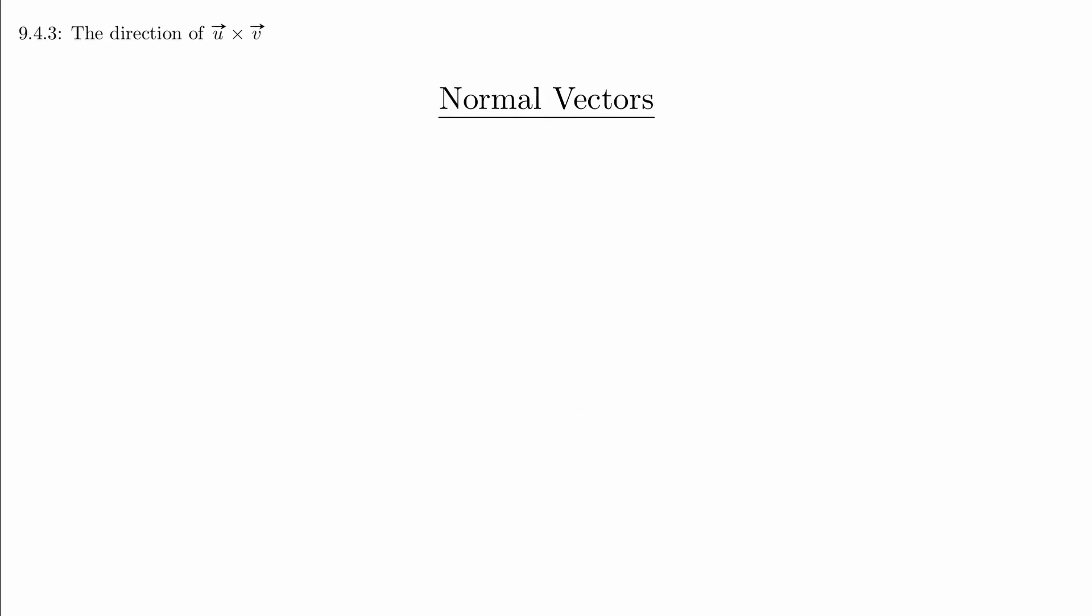It's sometimes the case that we use the vector n to talk about a vector that's perpendicular to a surface. n stands for normal, which in this context just means perpendicular to the surface. The vector n is usually a unit vector, so you often hear it referred to as the unit normal vector.